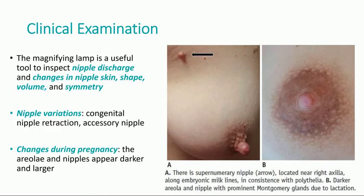A correct nipple evaluation always starts with the patient's history and clinical examination. A magnifying lamp is useful to inspect the nipple discharge as well as changes in nipple skin shape, volume and symmetry. There might be nipple variations such as in this picture where we can see a supernumerary nipple located near the right axilla along embryonic milk lines, consistent with polythelia.